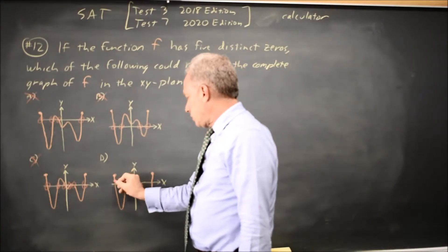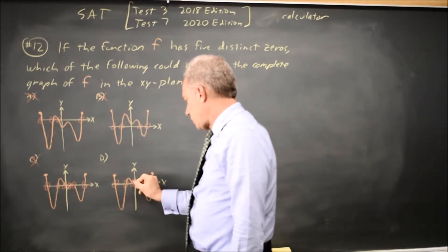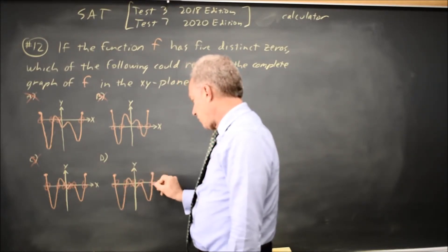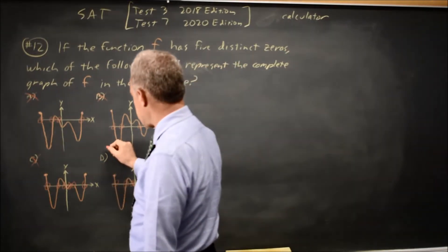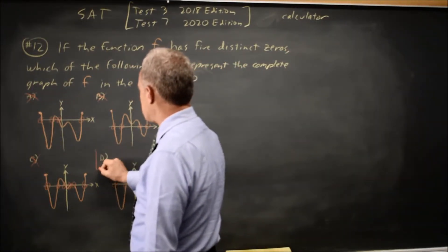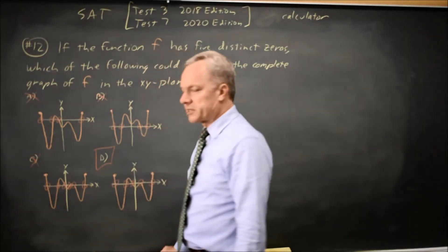And 1, 2, 3, 4, 5 distinct x-intercepts, which is five distinct zeros, so choice D would be the correct answer.